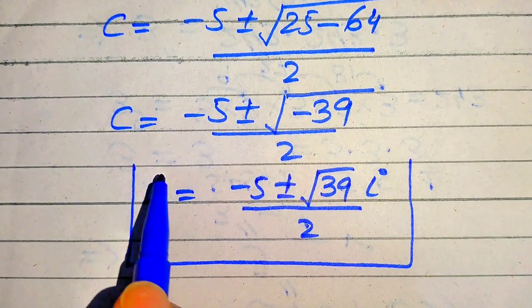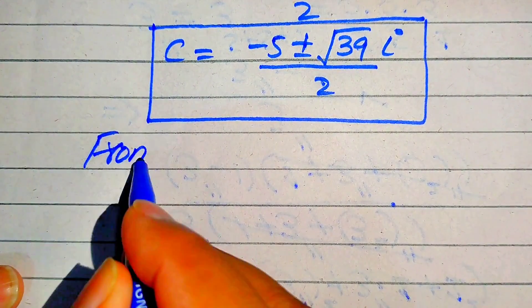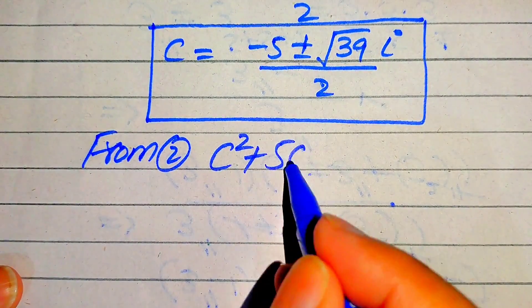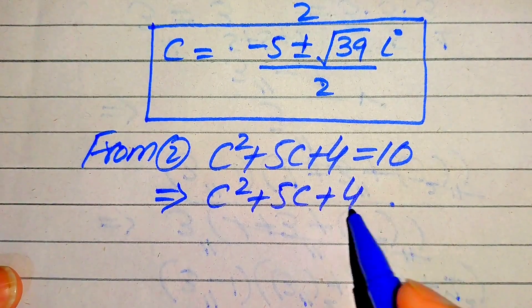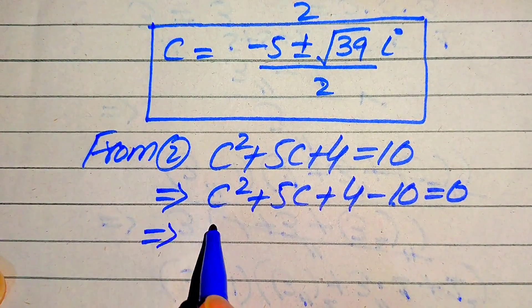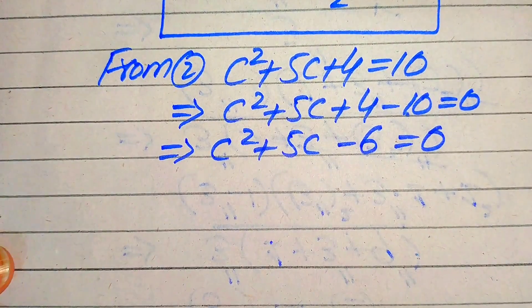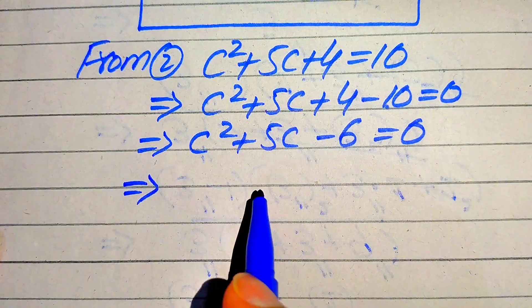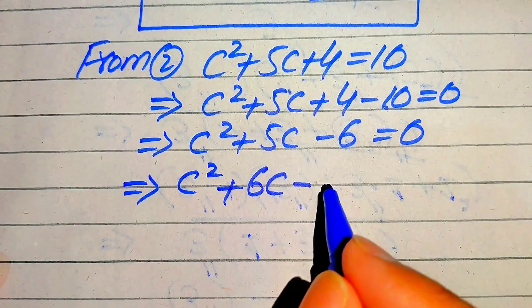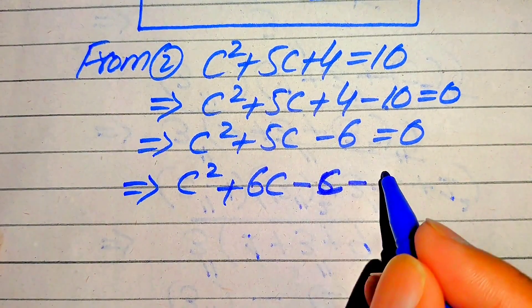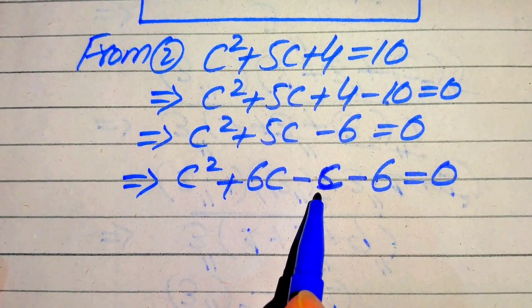For Equation 2: C² + 5C + 4 = 10. Moving 10 to the left gives C² + 5C − 6 = 0. Breaking the middle term: 6C − C = 5C, so we write C² + 6C − C − 6 = 0.